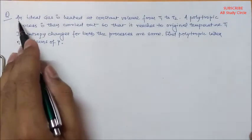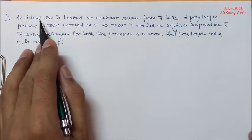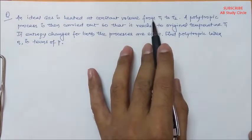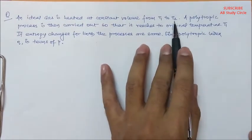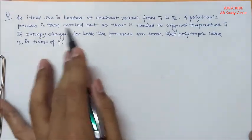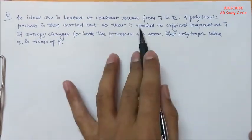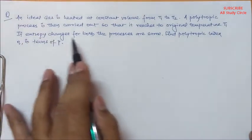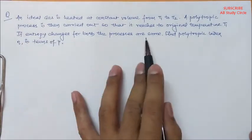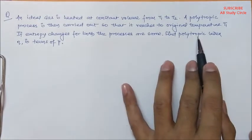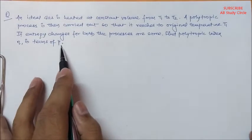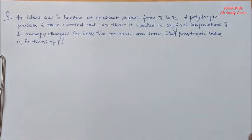The question is like this: An ideal gas is heated at constant volume from T1 to T2. A polytropic process is then carried out so that it reaches the original temperature T1. If the entropy change for both the processes are the same, find the polytropic index n in terms of gamma. It's a very important and conceptual question.